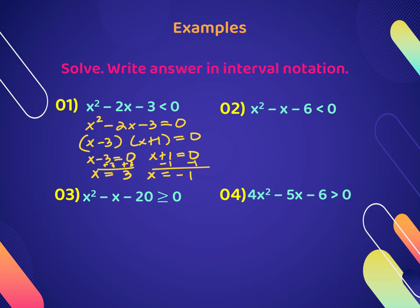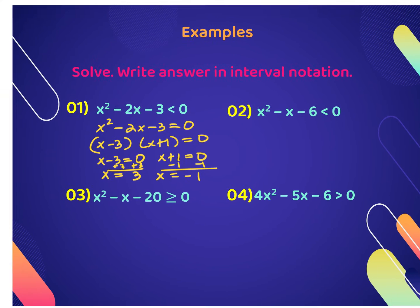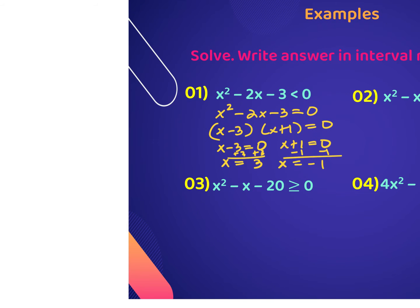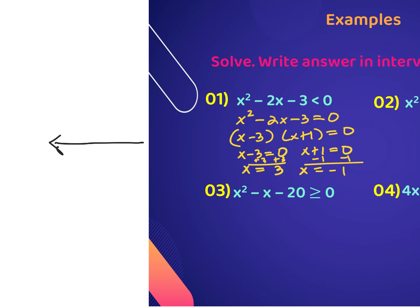These solutions are how we break up our number line. I'll draw the number line and put the breaking points least to greatest: negative 1 and positive 3. Now I need to find values that satisfy the original inequality, which was less than 0. The easiest way is to pick a test point — I like to plug in 0. Zero is located between negative 1 and 3 on the number line.